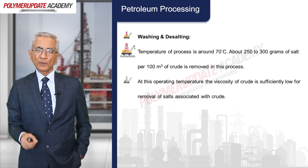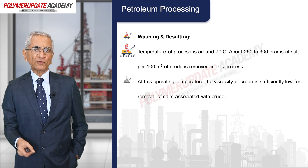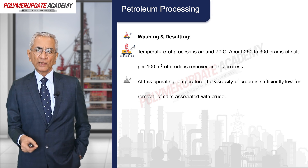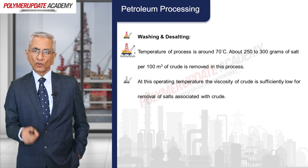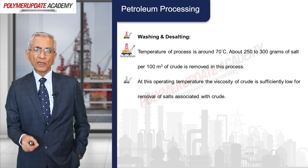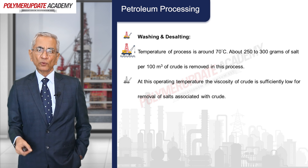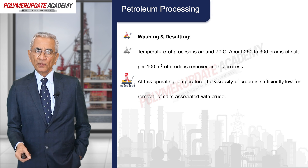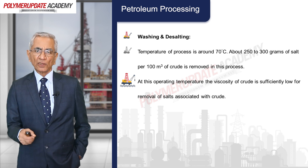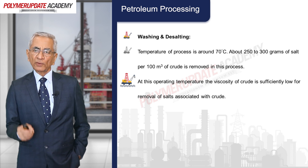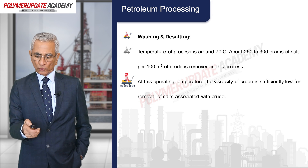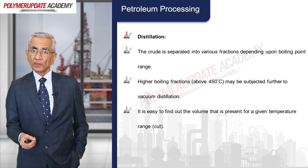The first operation is washing and desalting. The temperature of the process is around 70°C. About 250 to 300 grams of salt per 100 cubic meters of crude is removed in this process. At this operating temperature, the viscosity of the crude is sufficiently low for removal of salts associated with the crude.